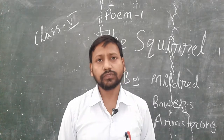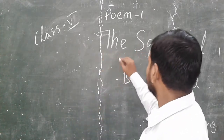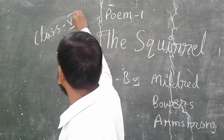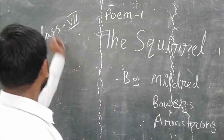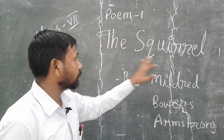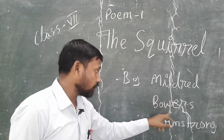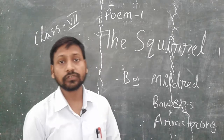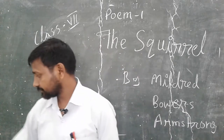Today we are going to complete the first poem, which is named 'The Square.' This is class 7th, poem first — 'The Square' by Mildred Bors Armstrong. This is the first poem.